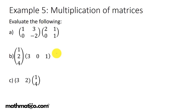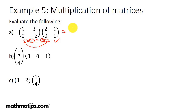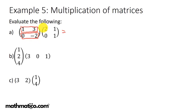Let's do some multiplication of matrices. In example 5a, we first check if multiplication can be done. We have a 2×2 and a 2×2 — the inner numbers are both 2, so yes it can be done. The solution matrix is going to be another 2×2. Now look at the rows of the first matrix: one, three is one row and zero, negative two is another row. We also look at the columns of the second matrix.